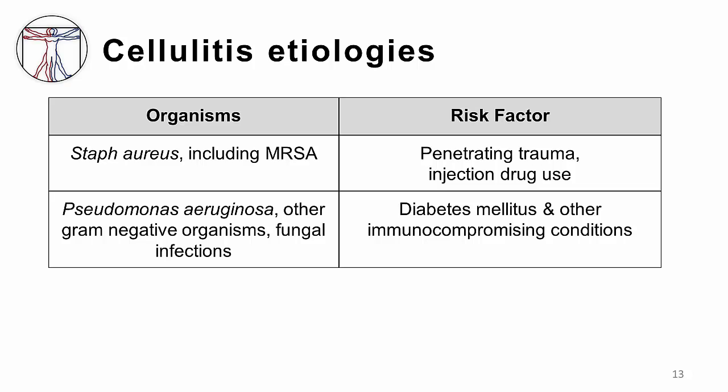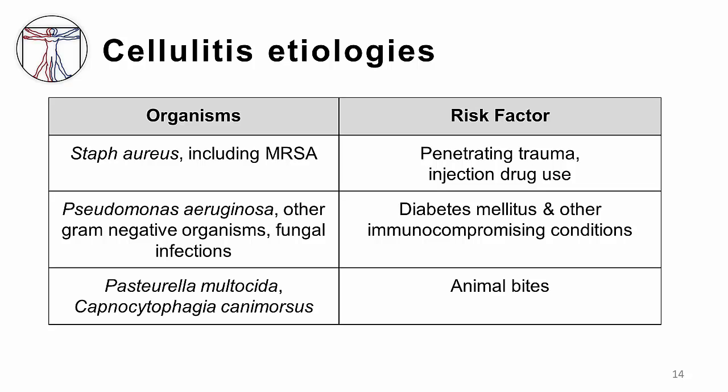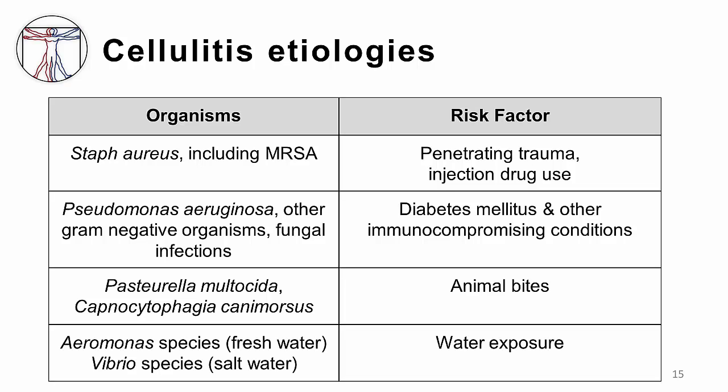Pseudomonas aeruginosa and other gram-negative organisms can cause cellulitis in diabetic and immunocompromised hosts, and fungal organisms can also play a role in these patients. Cellulitis associated with animal bites is most frequently caused by Pasteurella multocida or Capnocytophaga canimorsus. Finally, water exposures can be a tip-off for an infection caused by bacteria such as Aeromonas or Vibrio species.